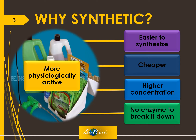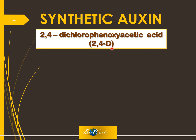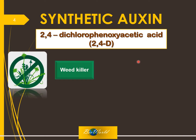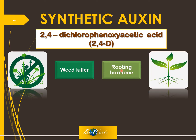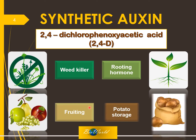Now let's look at the role of each synthetic hormone. Starting with synthetic auxin, also known as 2,4-D — where D stands for dichlorophenoxyacetic acid. It is used for four purposes: one, as a weed killer; two, as a rooting hormone; three, for fruiting; and four, for potato storage.